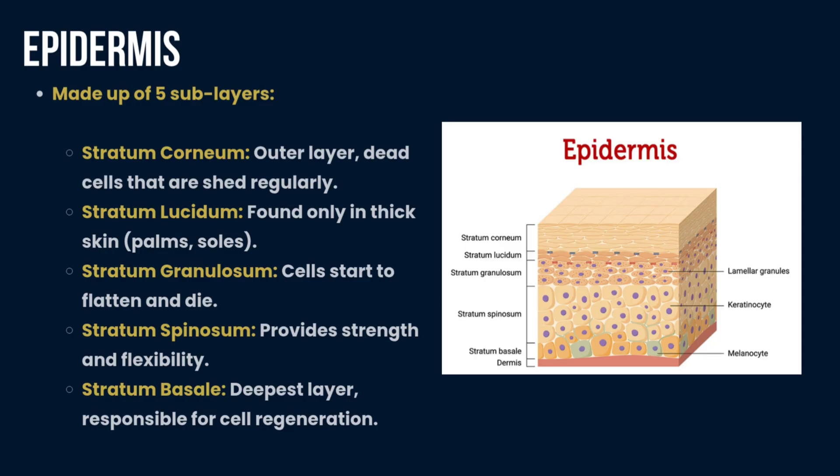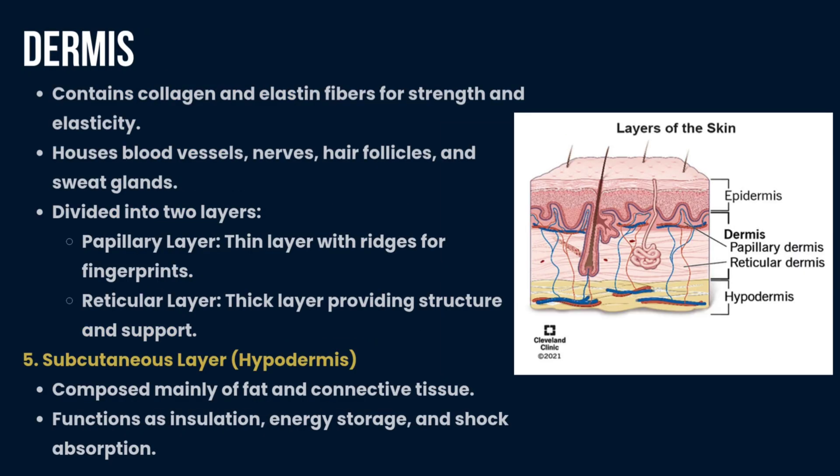The epidermis, the outermost layer, is made up of five sub-layers. First is the stratum corneum, the outer layer having dead cells that are shed regularly. Next is the stratum lucidum, found in thick skin such as palms and soles. Third is the stratum granulosum, where cells start to flatten and die. Fourth is the stratum spinosum, which provides strength and flexibility. The final layer is the stratum basale, the deepest layer responsible for cell regeneration.